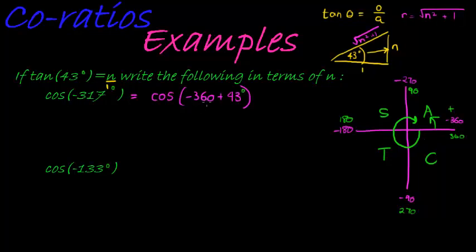And you can test this, negative 360 plus 43 is indeed negative 317. So that this one simplifies to be cos of 43 degrees. Now, with cos of 43 degrees, it's really simple.